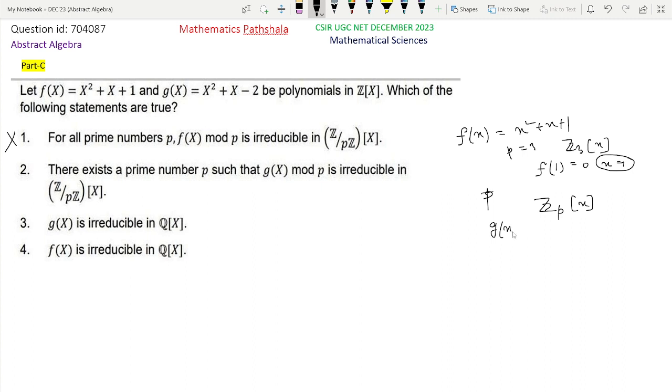Just see for this polynomial g(x) = x² + x - 2. This is very clear that always g(1) = 1 + 1 - 2 = 0. Always g(1) = 0.